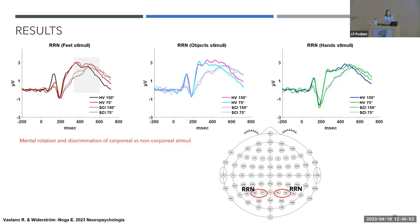All measurements are supraspinal. The tDCS stimulation targets the posterior parietal cortex, defined as an associative cortex responsible for integrating cross-modal stimulation. The interest is primarily sensory — to reduce pain and understand how participants with pain process the body, and whether manipulating body representation can reduce their pain.